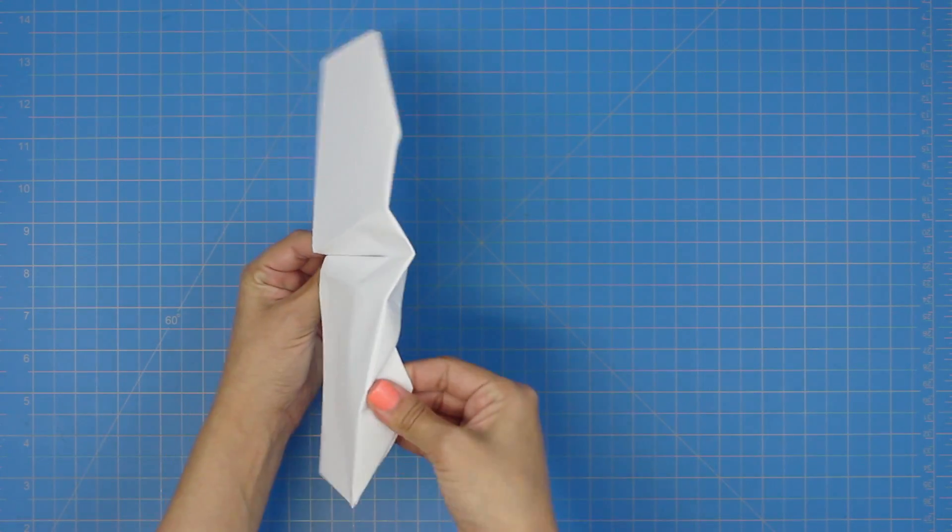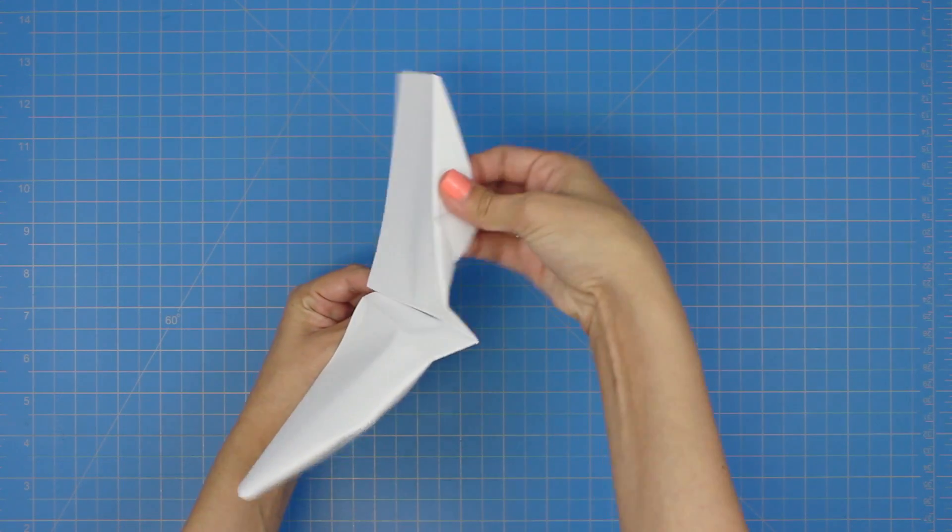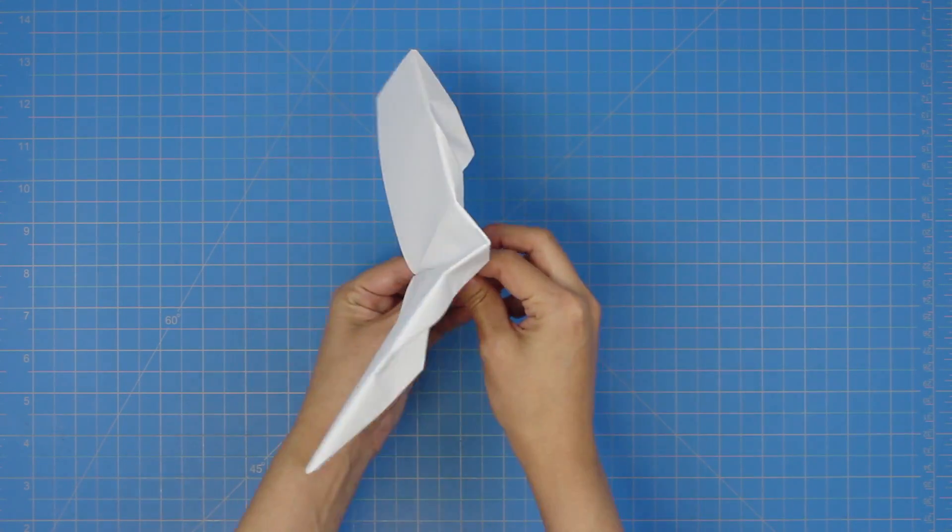Finally, pull down these bottom flaps, and this is what the underside should look like.